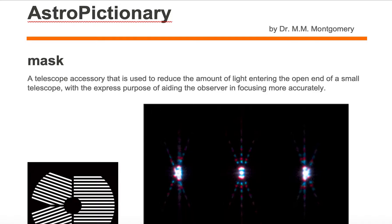A mask is a telescope accessory that is used to reduce the amount of light entering the open end of a small telescope with the express purpose of aiding the observer in focusing more accurately.